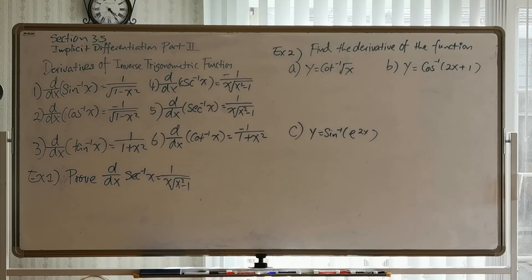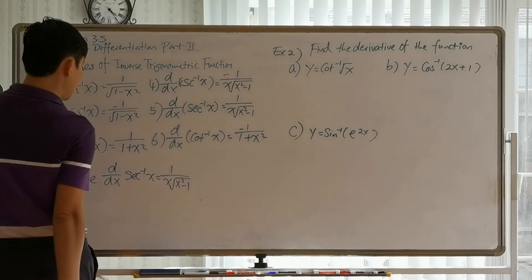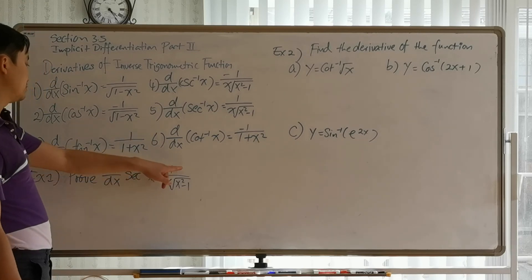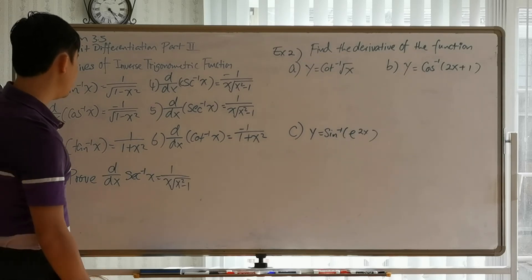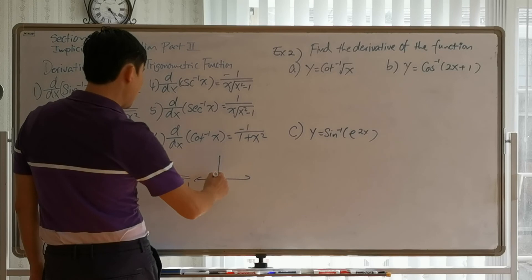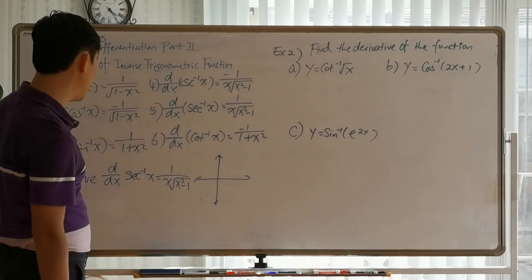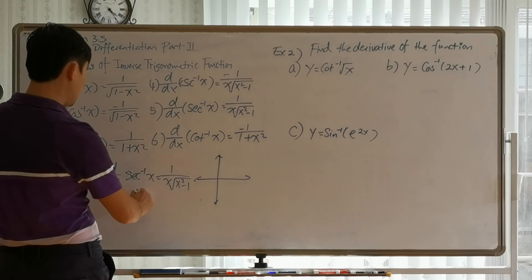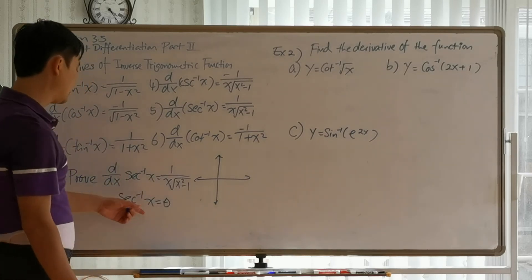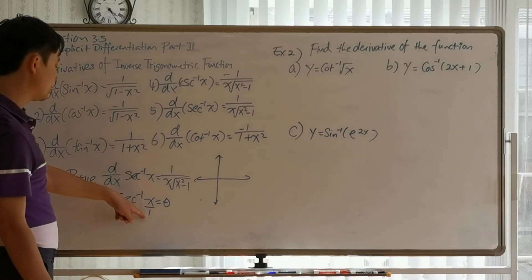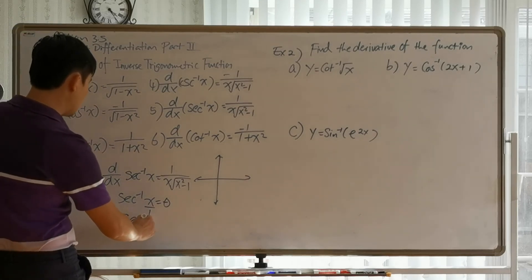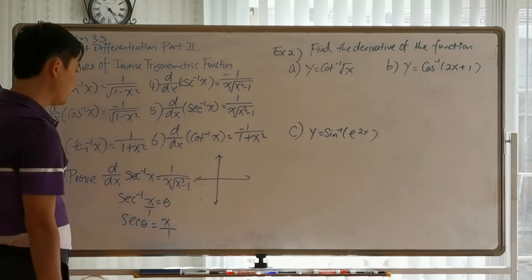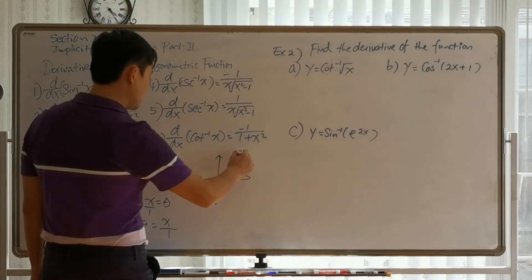Now let's prove one of the more complicated formulas: the derivative of inverse secant of x equals 1 over x times the square root of x squared minus 1. Going back to trigonometry, we know that inverse secant of x equals theta, because secant of theta equals x over 1 — that ratio where the denominator is always 1.